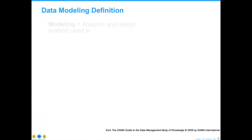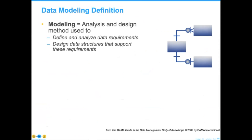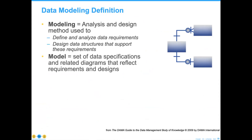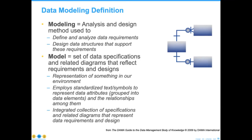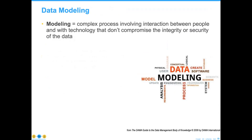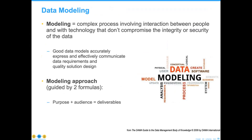Let's dive into the idea of data modeling. The modeling definition from the DMBOK — the Data Management Body of Knowledge — is that modeling is the analysis and design methods used to define and analyze data requirements and design data structures that support those requirements. A model is the set of specifications that come out, representing something in our environment that employs standardized text and symbols, so you can hand this data model to almost any other data modeler in the world and they'll be able to understand it.